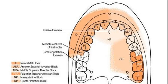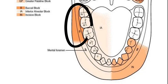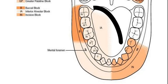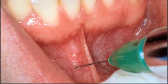Those were the maxillary blocks. Now moving on to the mandibular — here you have the buccal block and the inferior alveolar block through the mental foramen. Okay guys, that is it for this video. I'll see you in the next one. Take care!